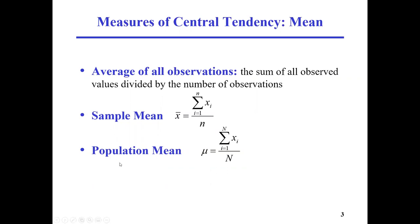We have sample mean and population mean, so before introducing mean I want to differentiate two concepts: sample and population. In statistics, population is the whole pool from which your samples can be drawn. For example, there is a big city with one million population and you want to carry out a survey to address the average commuting time of young people within this city.